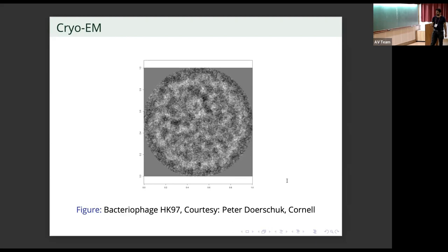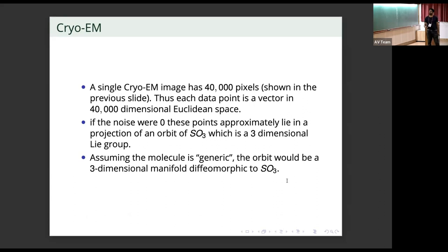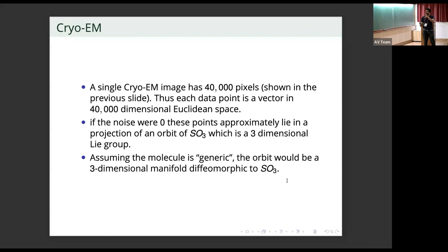A single cryo-EM image such as the one shown has about 40,000 pixels, so each data point is a vector in 40,000 dimensional Euclidean space. If the noise were zero, then these points ought to approximately lie in a projection of an orbit of the group SO3 of rotations of R3 — the orientation preserving rotations of R3. This is a three dimensional manifold; it's not two dimensional but a three dimensional surface.